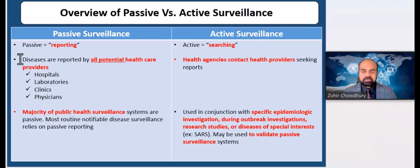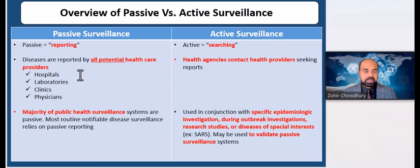Passive surveillance often gathers disease data from all potential reporting healthcare workers, and health authorities do not stimulate reporting by reminding health workers to report disease, nor provide feedback to individual health workers. The term passive is used to convey the idea that health authorities take no action while waiting for report forms to be submitted.